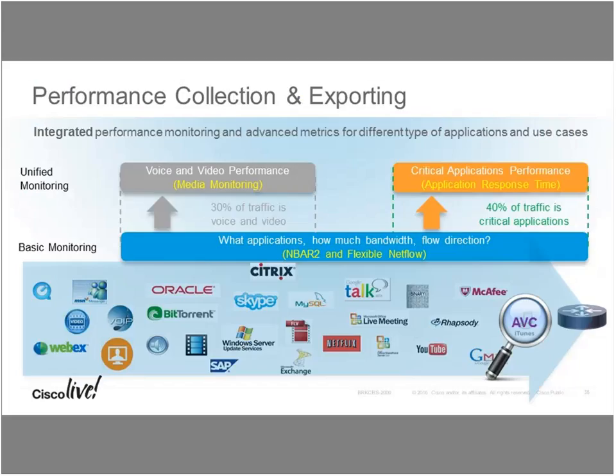The AVC suite also includes performance monitoring and exporting. For voice and video, we have media monitoring that keeps tabs on how your voice and video calls are performing. You can export this data to any monitoring tools — we use standards-based Flexible NetFlow for exporting application performance data and media monitoring. With the I-WAN app we have an application performance dashboard. You get to go to the dashboard every morning to see how your applications are performing, and if you want to troubleshoot a certain app you can double-click on it and start troubleshooting a specific application.